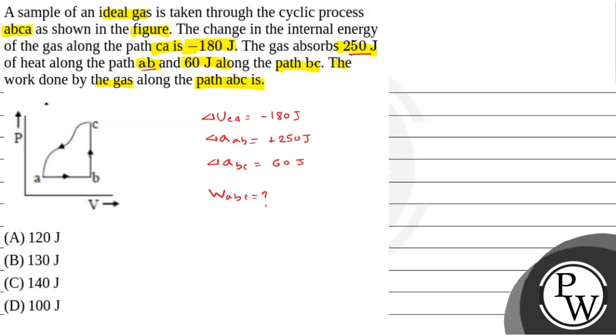From this question, our key concept is the first law of thermodynamics. So, the first law of thermodynamics says that energy can never be created or never be destroyed. So, del Q is equal to del U plus del W. That is, change in heat is equal to change in internal energy plus change in work done.